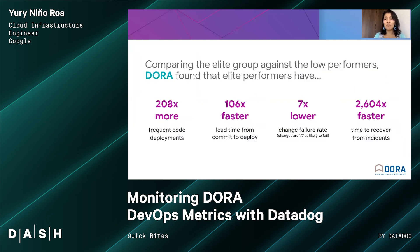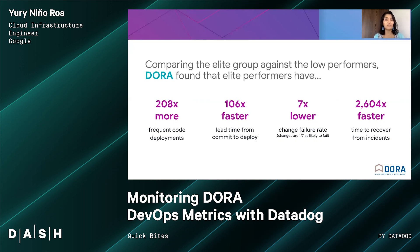Based on years of input and experience from tens of thousands of IT professionals, DORA has been comparing elite performance against low performance. In the last publication, for example, DORA research found that high performers had 200 times more frequent code deploys, 100 times faster lead time, 7 times lower change failure rate, and 2,600 times faster time to recover.